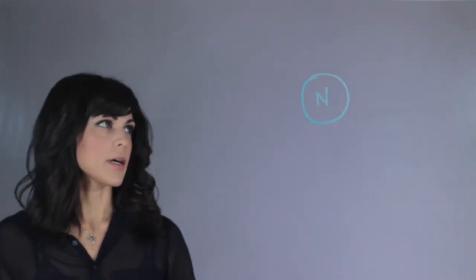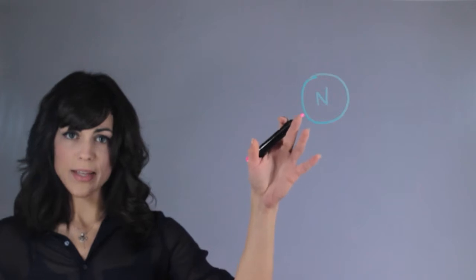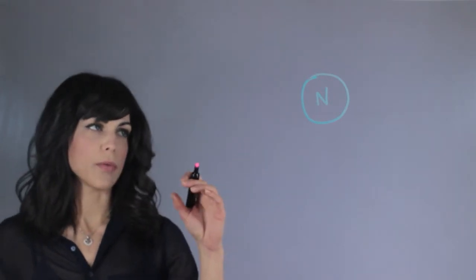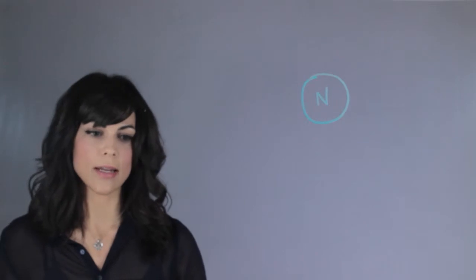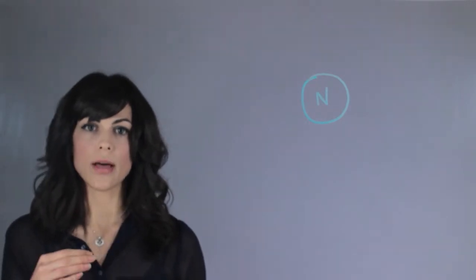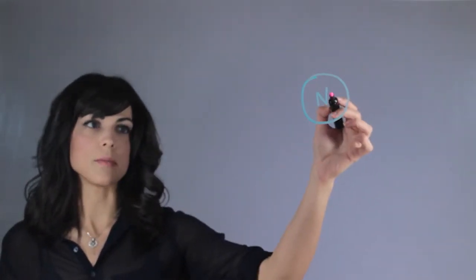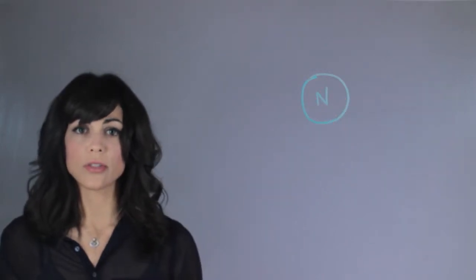So Neptune is one of the gas giants and one of the things that we need to figure out when we're talking about pressures and densities is that they change a lot with height. So depending on how deep it is in the planet, they change drastically.